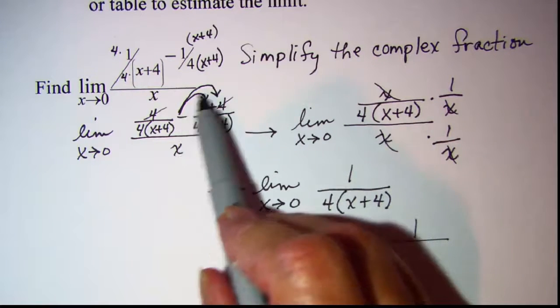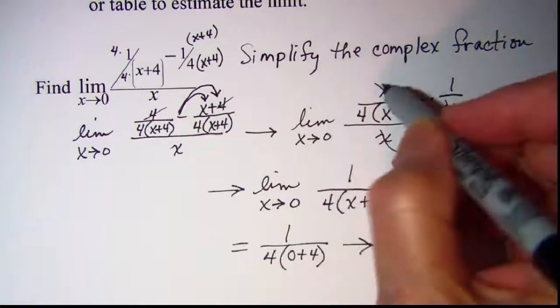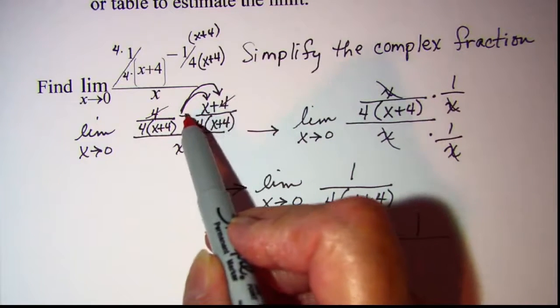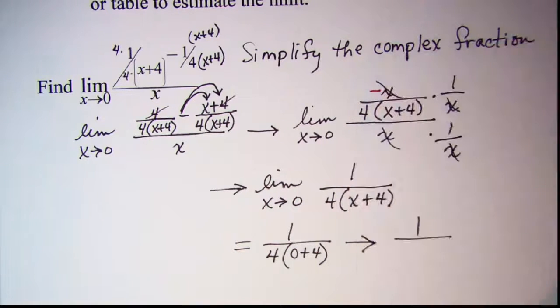All right, this is a negative x that I forgot to distribute. I mean I said to distribute, but I didn't. So let me come up and make these corrections. This negative is distributed here, so this is actually a negative x.